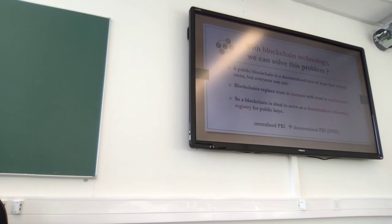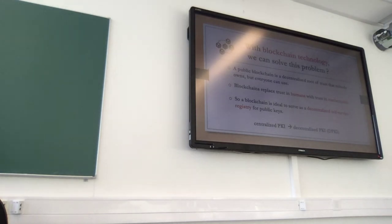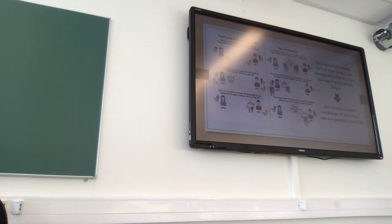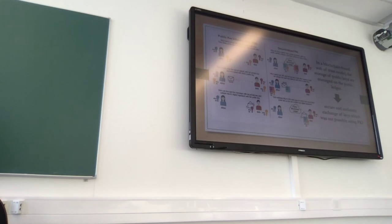Blockchain could serve as a decentralized self-sovereign register for public keys. One idea is to transform centralized PKI — Public Key Infrastructure — into decentralized PKI. In traditional PKI, we rely on certificate authorities, which are central organizations that distribute public keys and verify who owns what. In decentralized PKI, users won't rely on any centralized organization — instead the root of trust will be the blockchain, which will store and connect public keys to private keys.